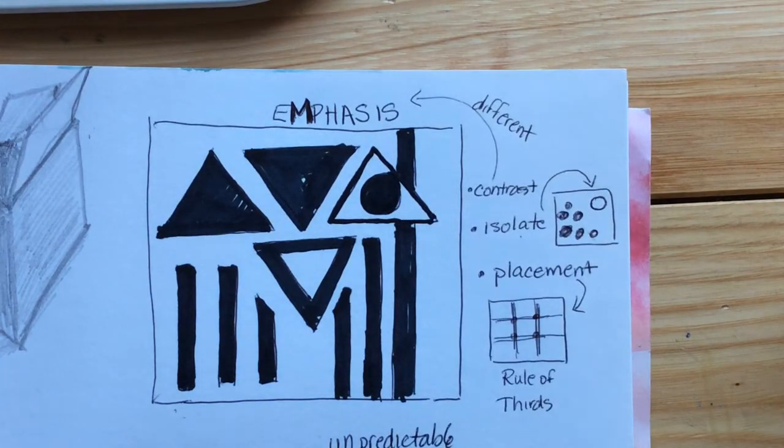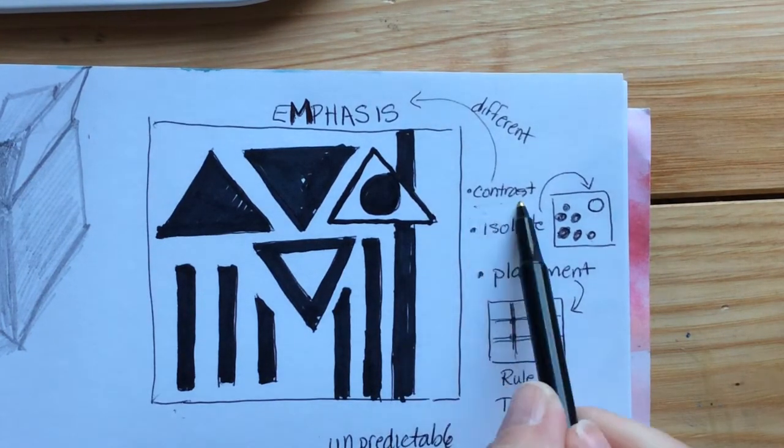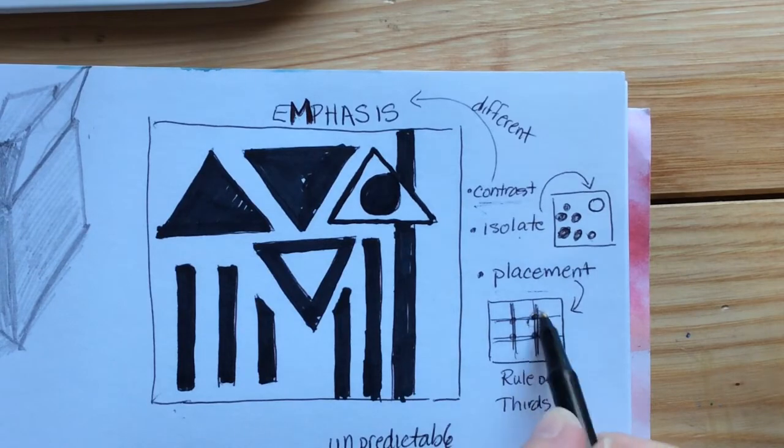Emphasize that line a little bit and outline it. And now I have a strong sense of emphasis with contrast and placement.